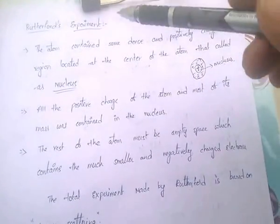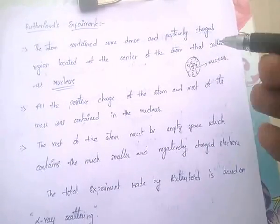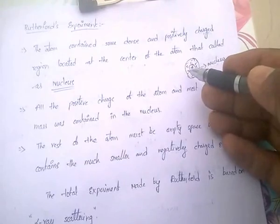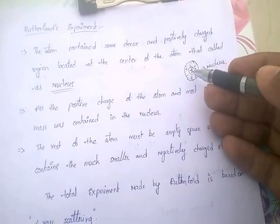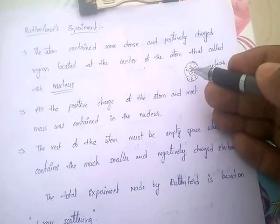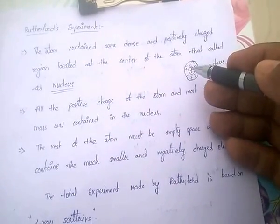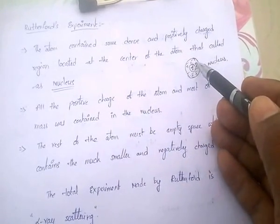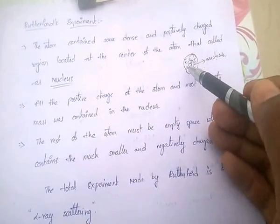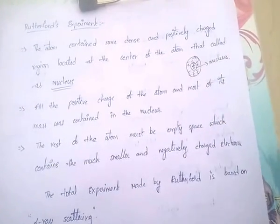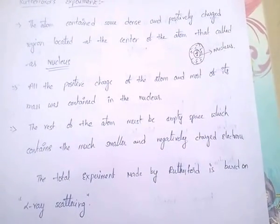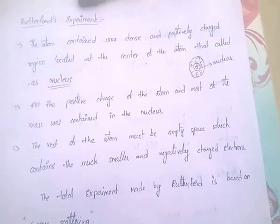According to the Rutherford model, the atom contains a dense and positively charged region — the nucleus — at its center. All the positive charges and masses are contained in the nucleus, and the remaining space of the atom must be empty space containing smaller negatively charged electrons.